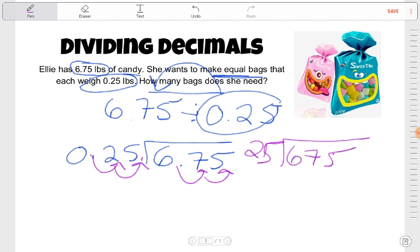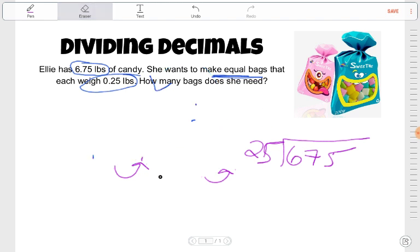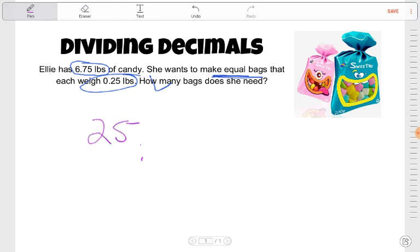Let me just clean everything else up. And it is again 25 outside the house, 675 inside the house. And now we can just go ahead and divide normally.